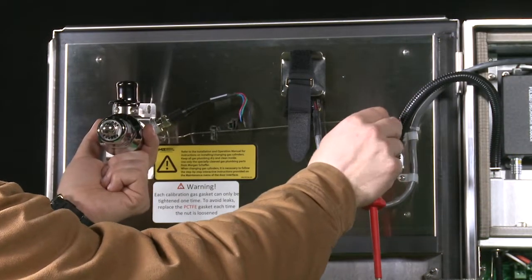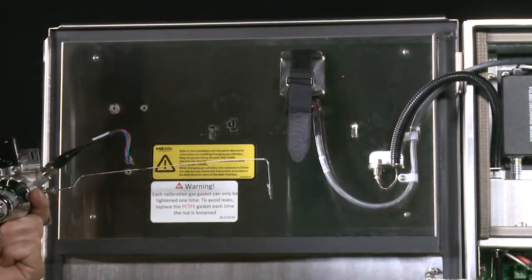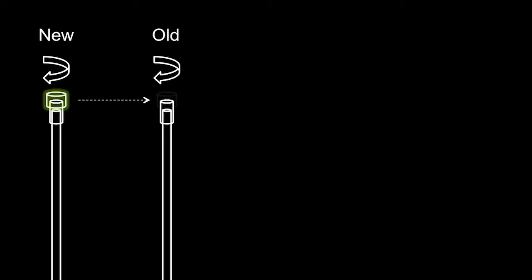Carefully remove the calibration gas module. Keep the module in a clean place. Installing the new calibration gas module. Now, take the replacement module.